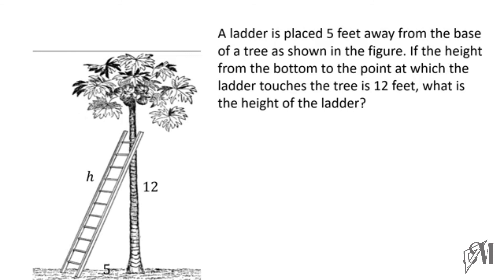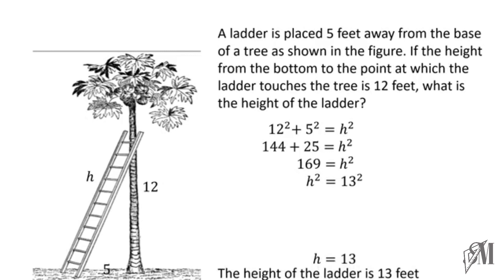Once we apply the Pythagoras theorem, we can write 12² + 5² = h², because the ladder is the hypotenuse. Let's simplify: 12² is 144 and 5² is 25. The sum is 169, which is 13². Therefore, the length of the ladder is 13 feet.